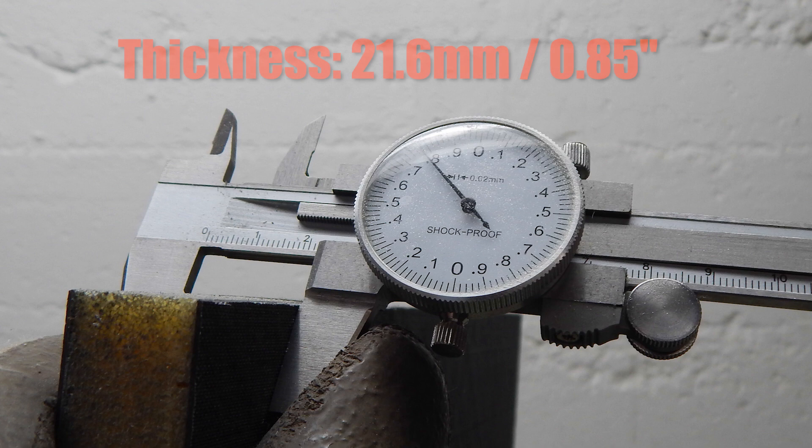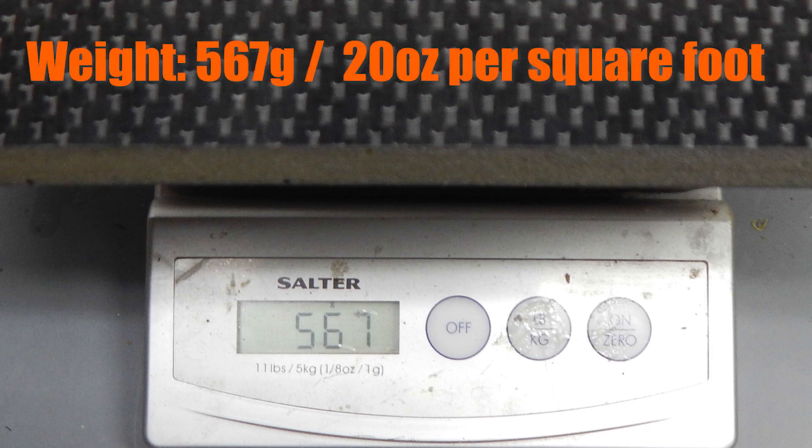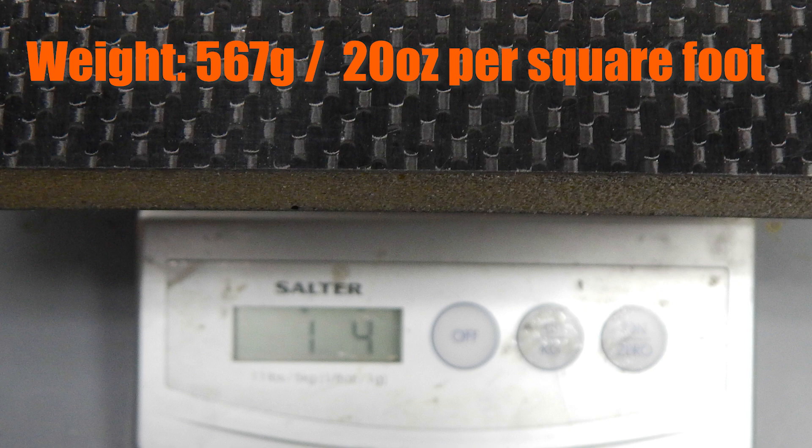The overall thickness is 21.6 millimeters, or 0.85 inches. And the weight 567 grams, or about 20 ounces per square foot for this one square foot panel.